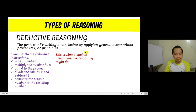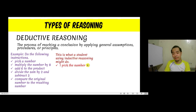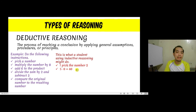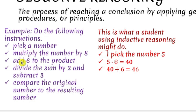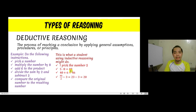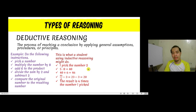Starting with inductive reasoning: the first instruction is to pick a number. I am going to pick 5 — you can choose any other number. Then multiply by 8, which gives us 40. Add 6 to the product: 40 plus 6 is 46. Divide the sum by 2, giving us 23. Then subtract 3, giving us 20. Comparing the number we picked (5) with the result (20), we can say the result is 4 times the original number.